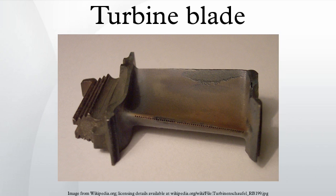Modern turbine blades often use nickel-based super-alloys that incorporate chromium, cobalt, and rhenium. Aside from alloy improvements, a major breakthrough was the development of directional solidification and single-crystal production methods.